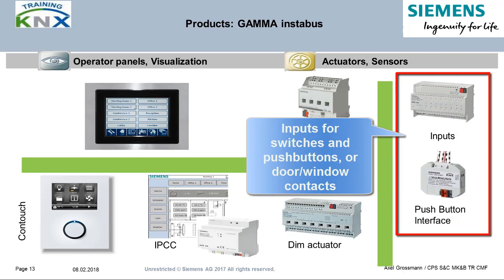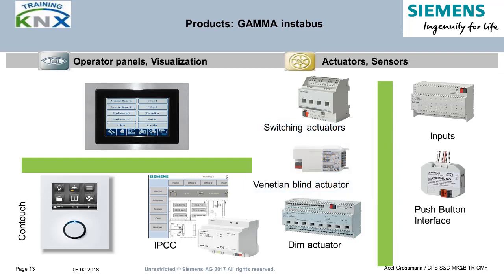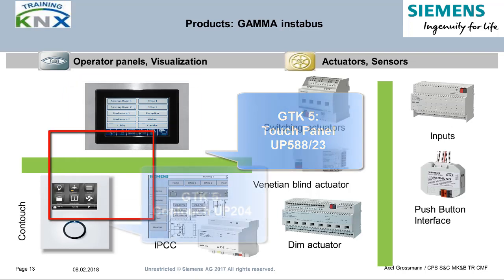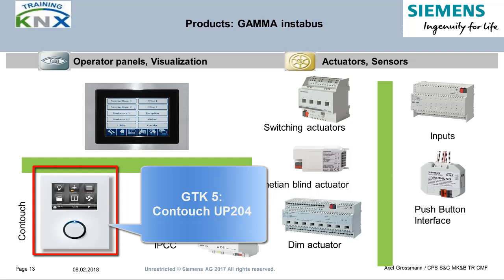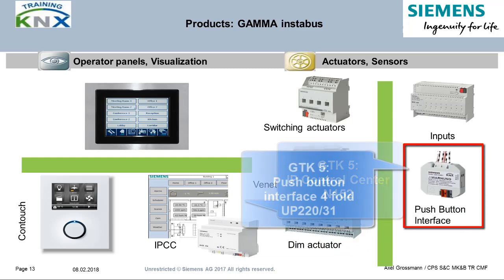Inputs are also necessary everywhere, to enable regular switches to operate on the bus or to be used as monitoring contacts, for example for auxiliary switches on MCBs, for window and door monitoring. In the GTK5, the following input devices are included: touch panel UP588-23 for 24V operation, room control unit CONTOUCH UP204, IP control center N152, and push button interface 4V UP220-31.